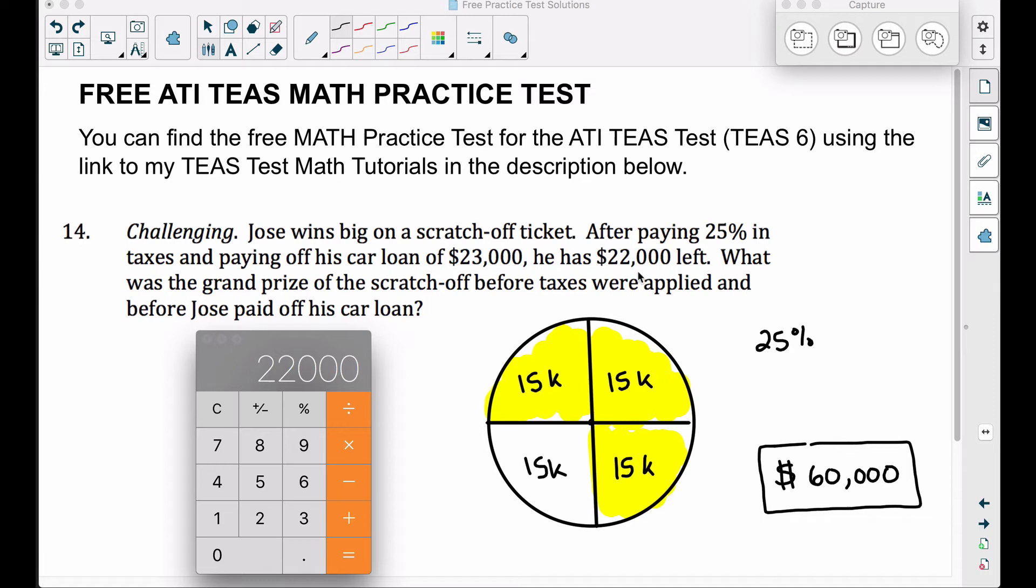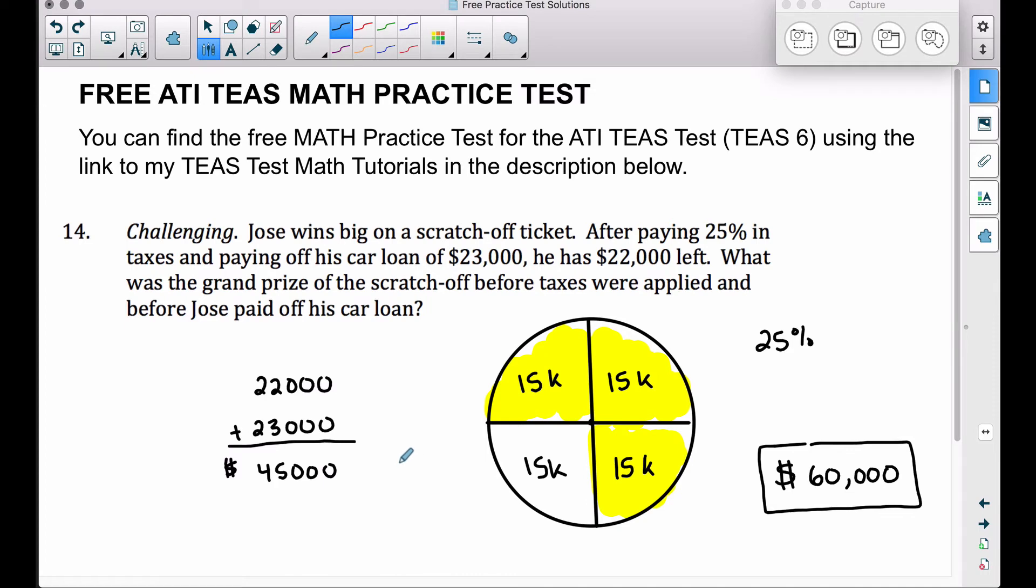Well, if he paid off the car loan, we're going to subtract that from the $45,000. And notice how much money Jose has left: $22,000. So we're checking our work based off of that. And the weird thing here is understanding that if we take the money he had left, we added back the money he paid on his car loan. That's $45,000, that represents 75%.